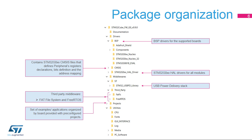Like all STM32Cube firmware packages, the STM32Cube G0 firmware solution comes in a single zip file having the structure shown in this slide. It is organized in several main folders. The documentation folder contains the STM32Cube G0 getting started document, helping developers to quickly become familiar with the firmware package and its contents. The Drivers folder contains all the ST-developed drivers.